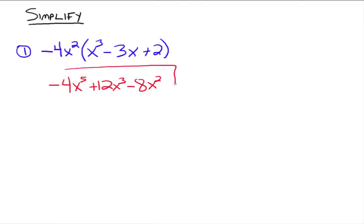And then negative 4x squared times a positive 2 gives you a negative 8x squared. It's just the distributive property and using those rules of exponents from before.